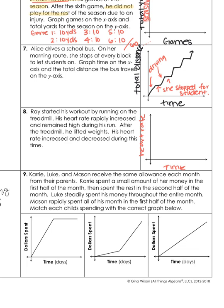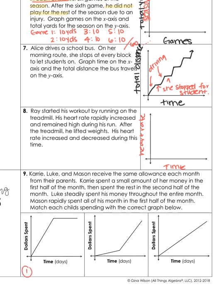I'm also going to have you do number nine on your own. Number nine says: Carrie, Luke, and Mason received the same allowance each month from their parents. Carrie spent a small amount of her money in the first half of the month, then spent the rest in the second half. Luke steadily spent his money throughout the entire month. Mason rapidly spent all of his money in the first half of the month. Match each child's spending with the correct graph below — on graph one, does it represent Carrie, Luke, or Mason? Same for graph two and graph three. That concludes your video on describing real-world graphs. If you have any questions, let us know.